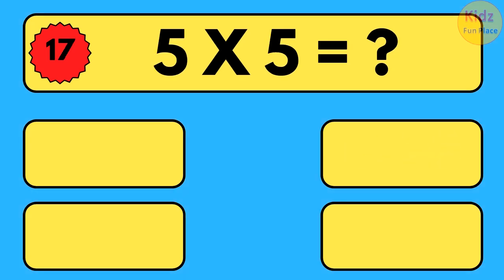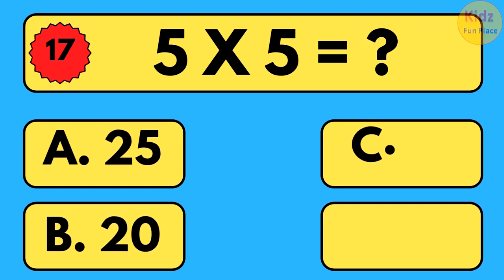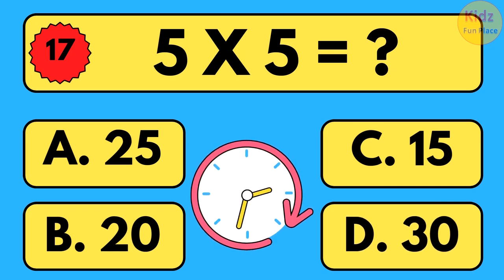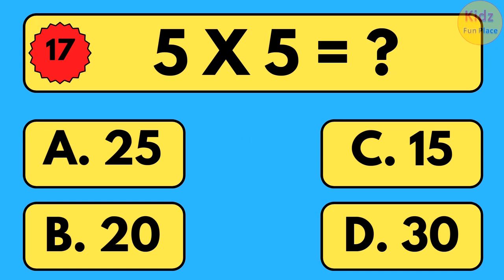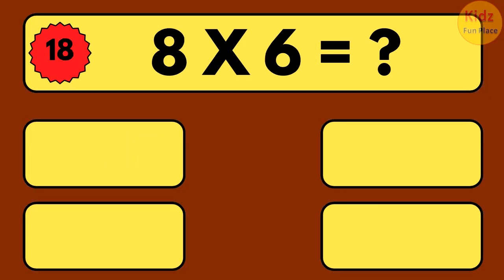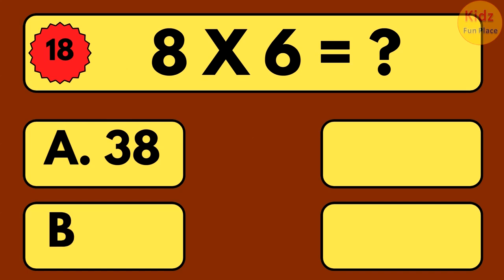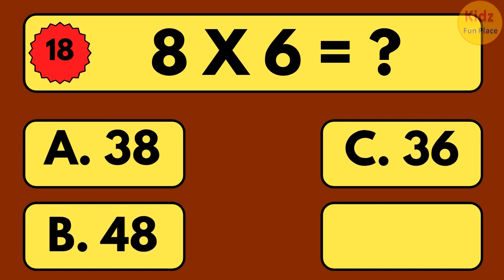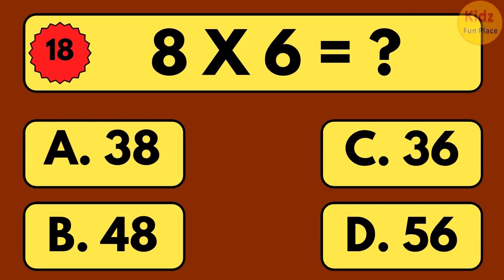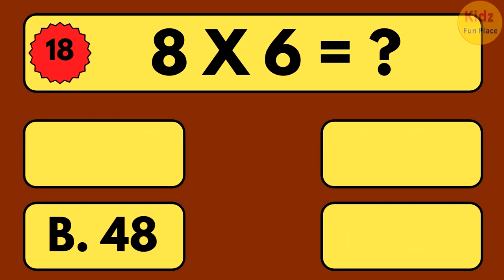5 times 5 is equal to what? 5 times 5 is equal to 25. 8 times 6 is equal to what? 8 times 6 is equal to 48.